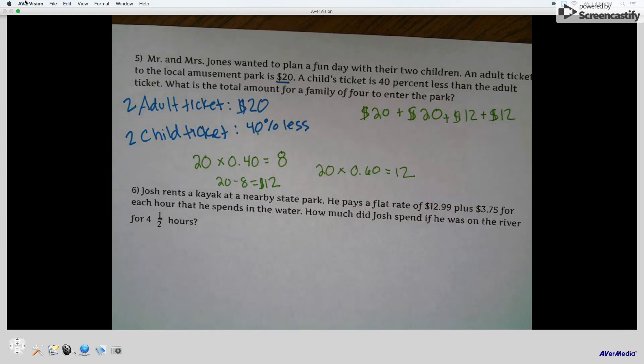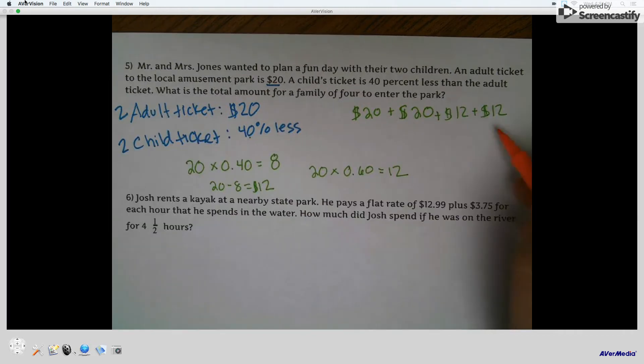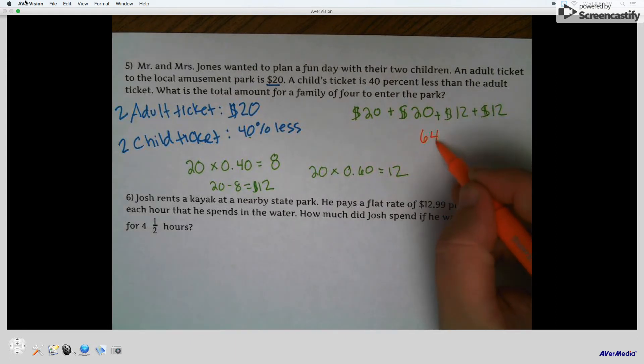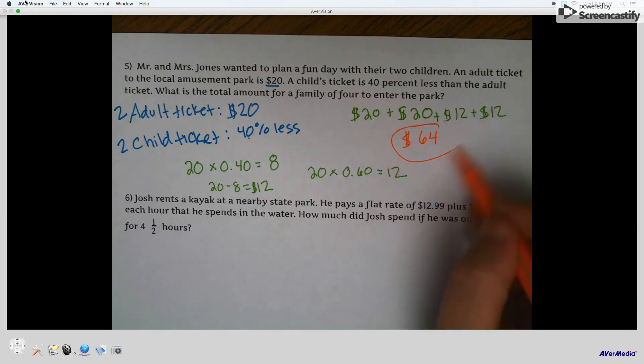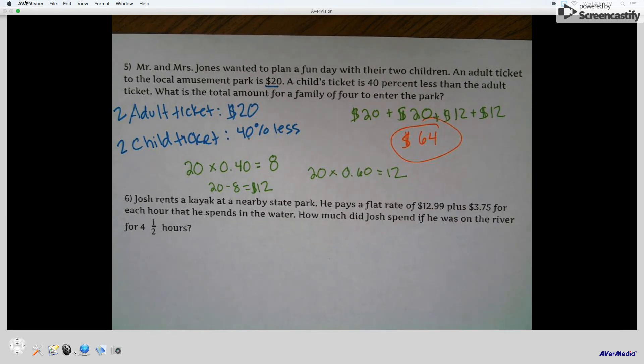And my total is 20 and 20 is 40. 12 and 12 is 24. So the total that you're going to be paying is $64. For those four to enter, that's the price of one ticket at King's Dominion, probably.